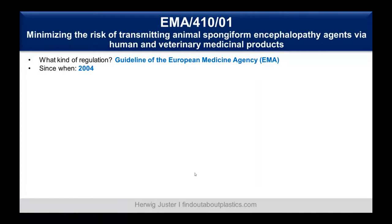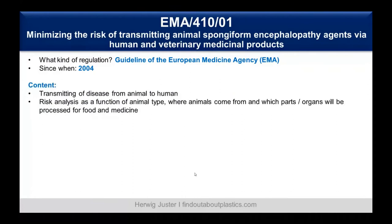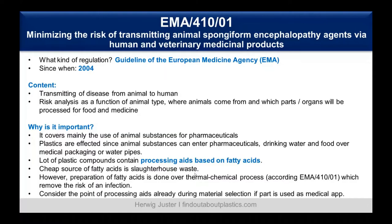The third regulation is the EMA 410-01, a guideline of the European Medicines Agency. It regulates the transmission of disease from animals to humans — how this can be avoided and how to reduce infections. Basically, the whole guideline is a risk analysis as a function of animal type, where the animals come from, and which parts or organs are processed for food and medicine. It mainly covers animal substances for pharmaceuticals; however, plastics are affected since animal substances can enter pharmaceuticals and further the drinking water and food chain via, for example, medical packaging or water pipes made of plastic.